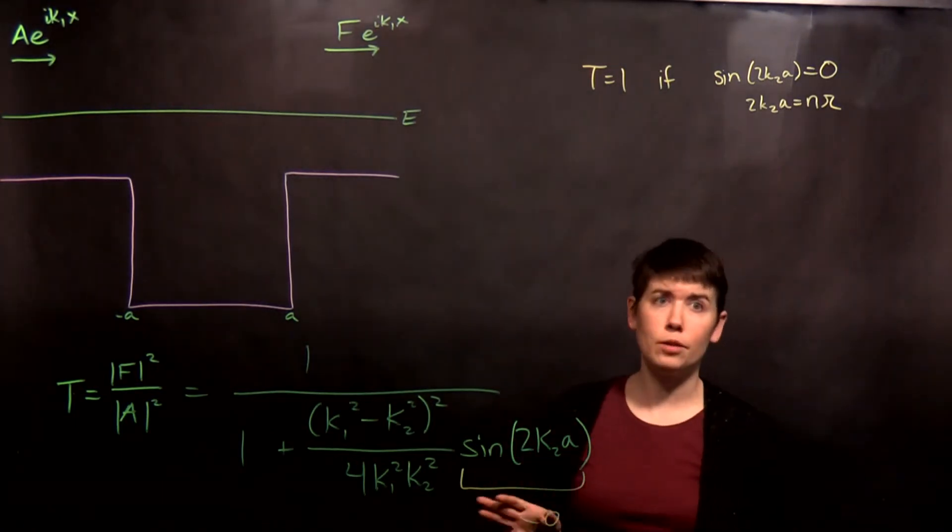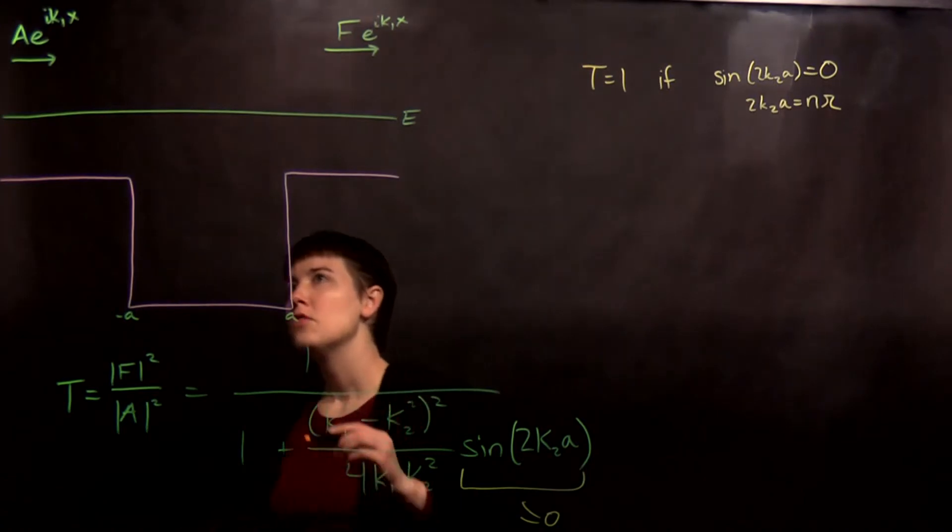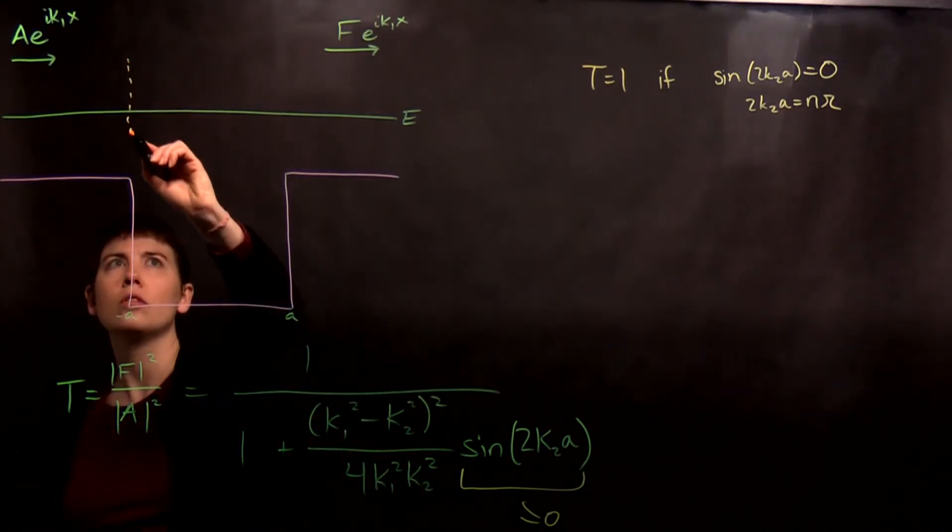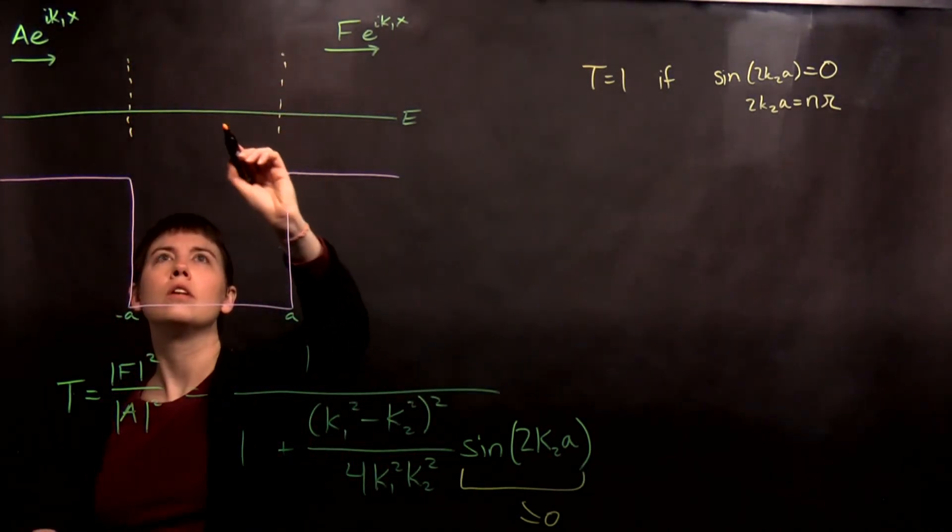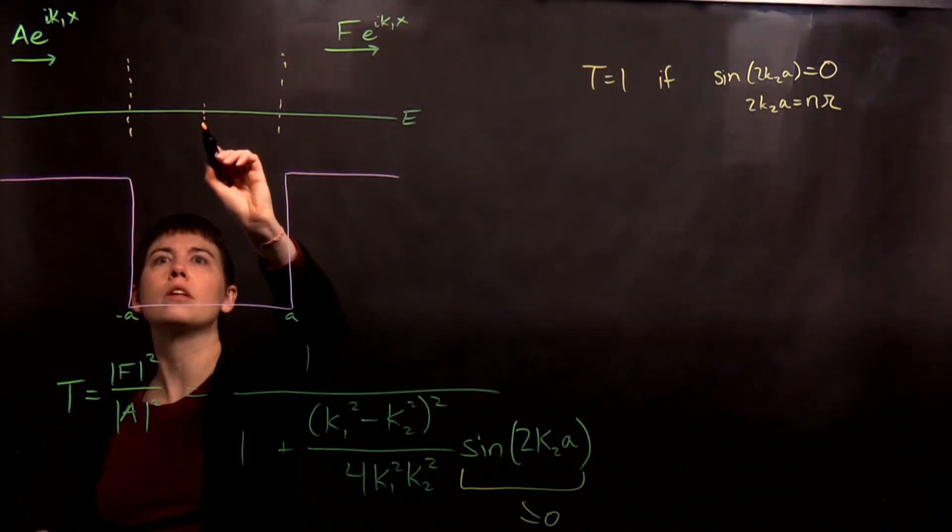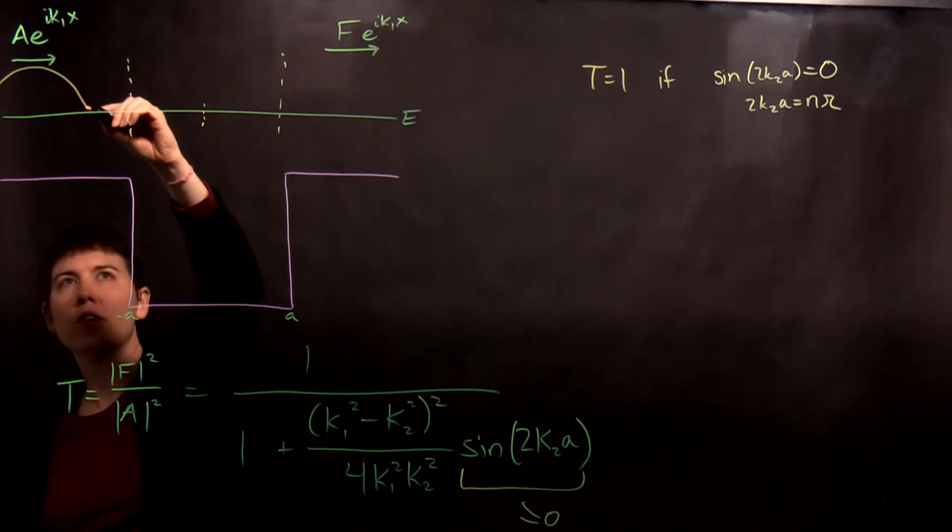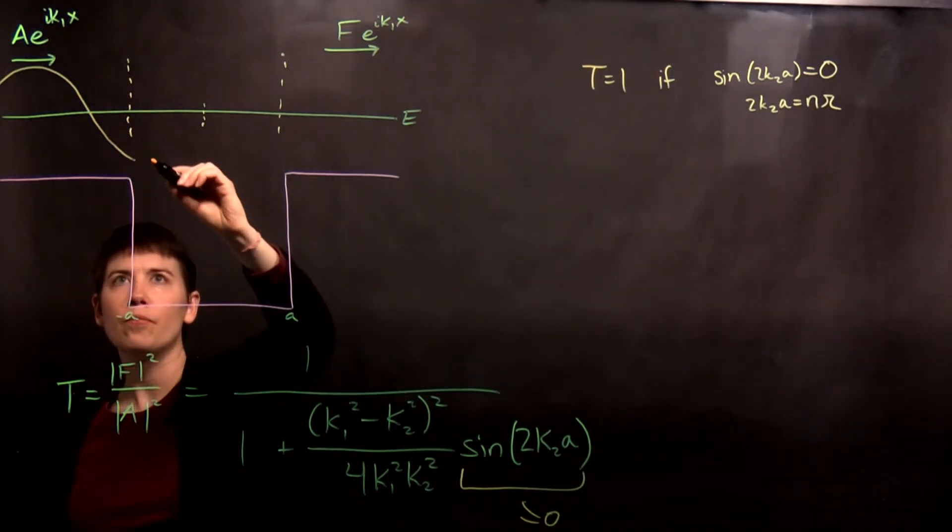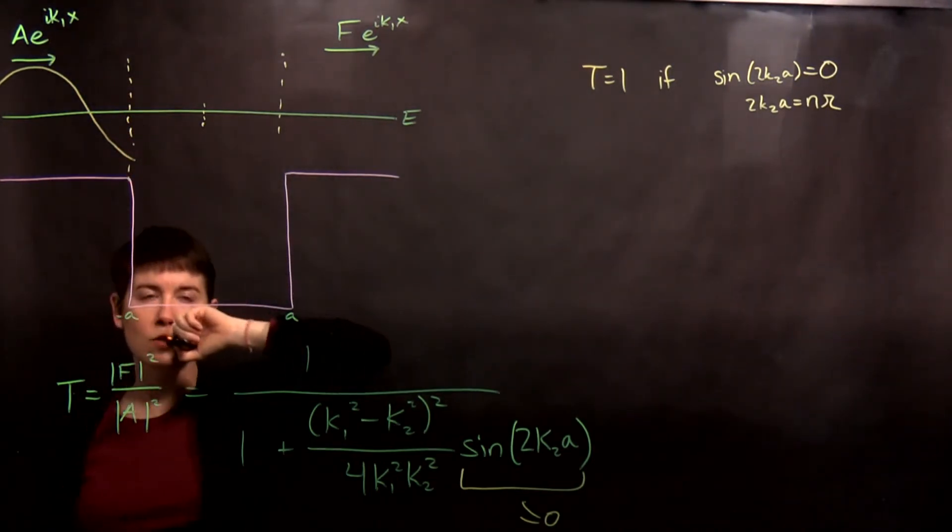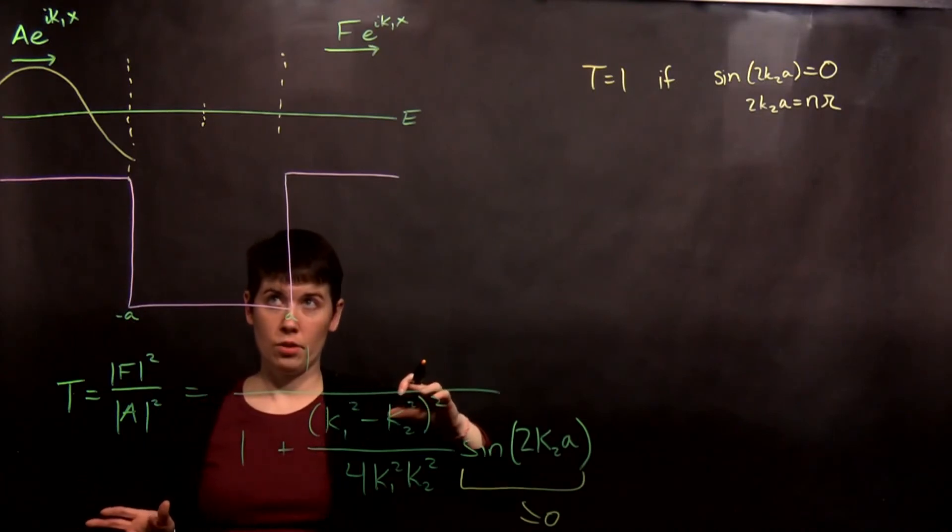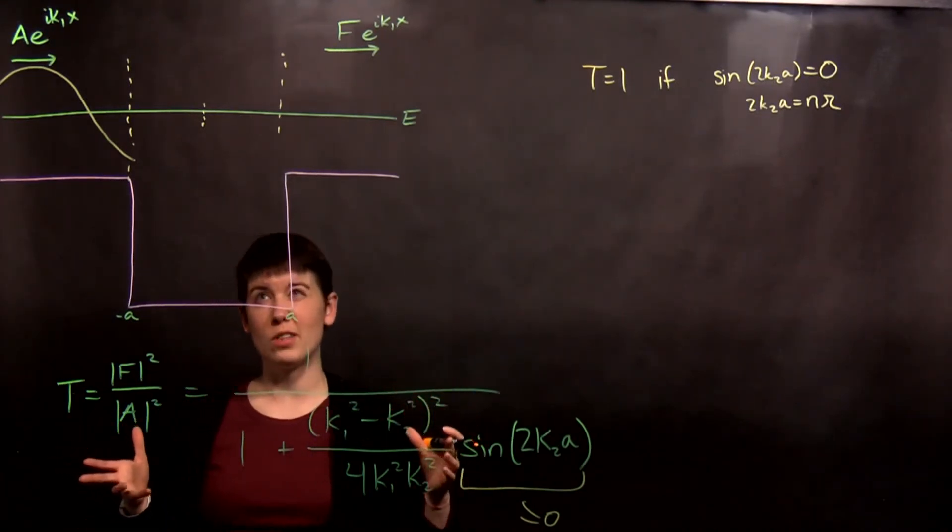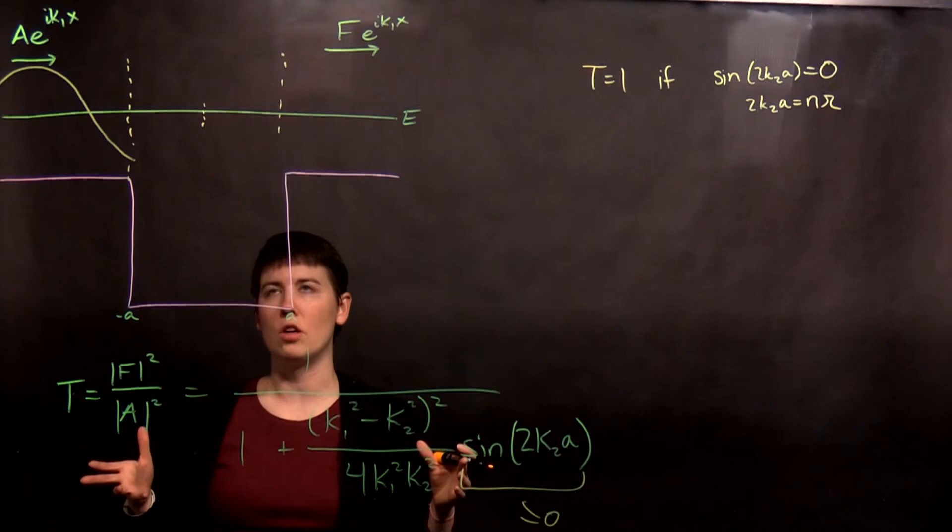And this is where I'm probably not going to be able to draw this very well. So we have our incoming wave. Now I'm going to try to draw a symmetry mark. And we have this incoming wave, and then it gets here, right? And now it's going to change its wavelength.